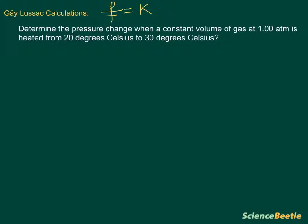What we need to do first is identify all the information that we have. We know that there is a pressure change, we have constant volume, and the gas is currently at one atmosphere pressure. It's going to be heated from 20 degrees to 30 degrees. The first thing we want to do is make sure that we set this up in terms of our problem.